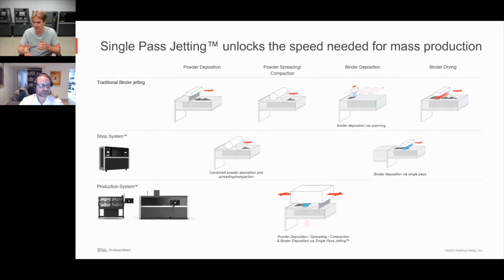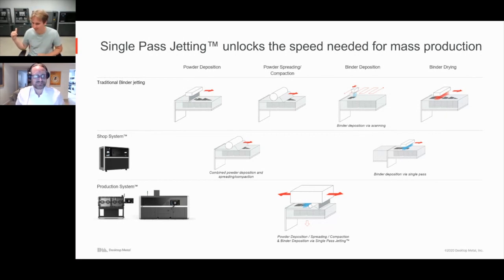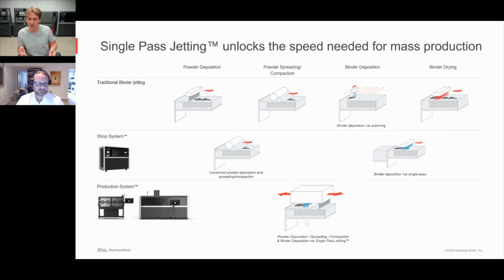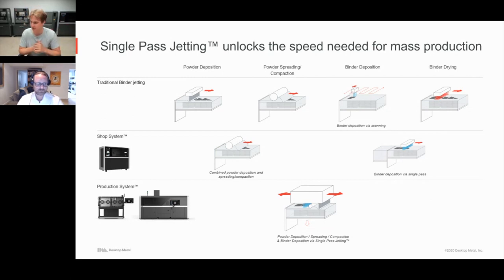Quick summary: Bound Metal Deposition on the Studio System extrudes metal rods via FDM then sinters them. The Shop System and Production System are binder jetting systems — jetting binder onto metal powder and putting them into furnaces to sinter.